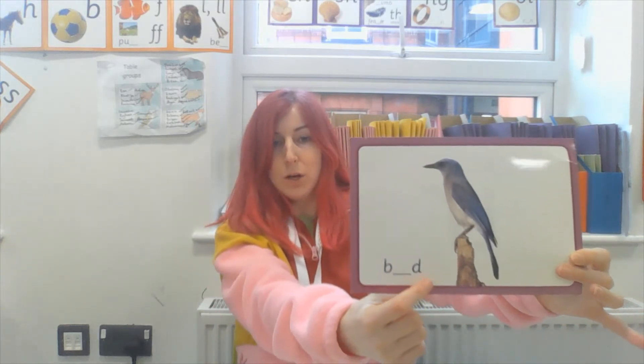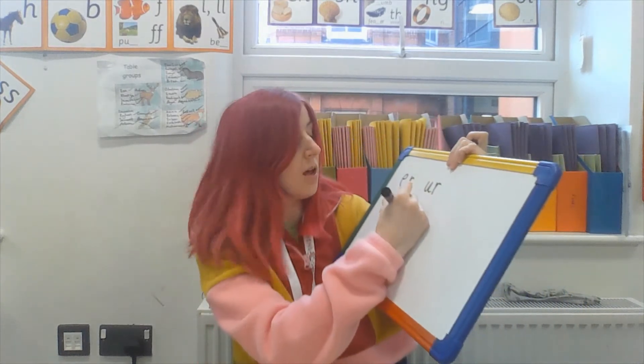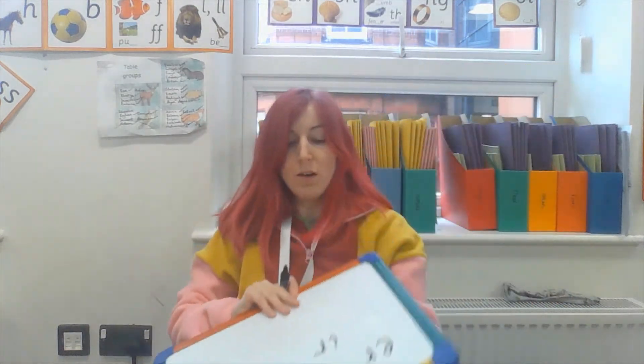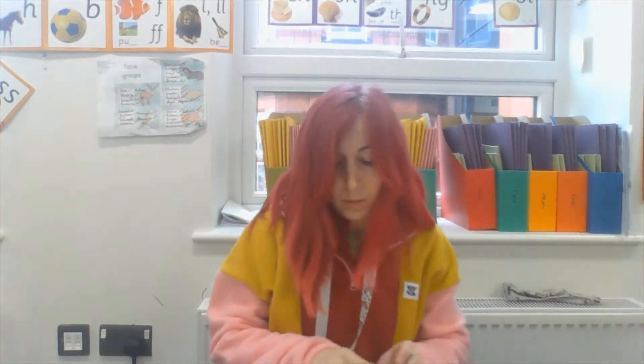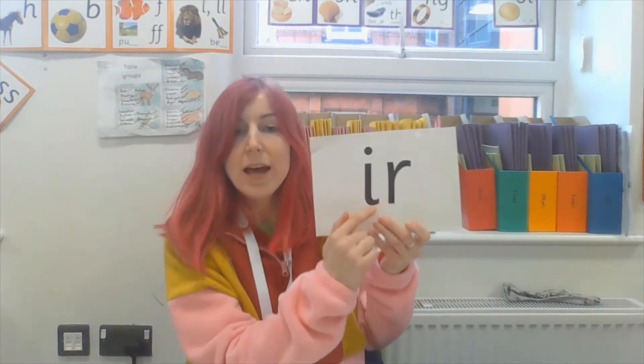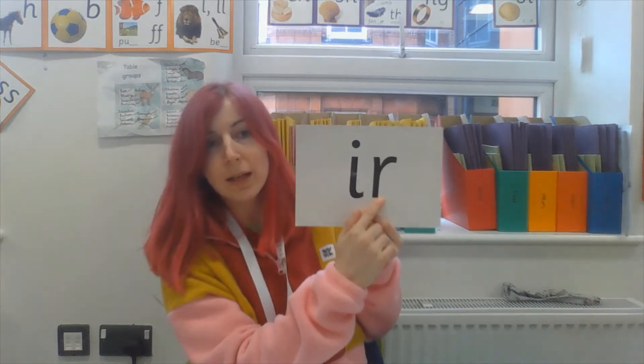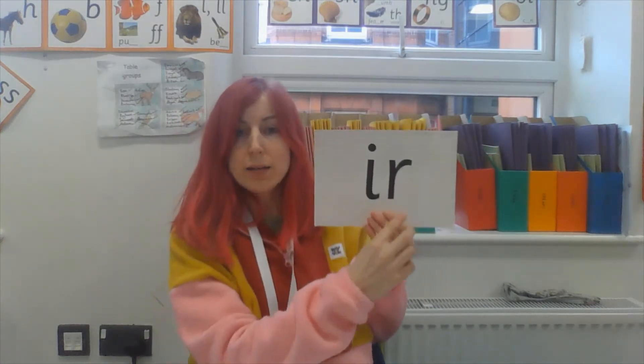Now it's time for our new phase 5 sound that we're looking at today. It is the 'ir' diagraph. We have learned two other ways of writing and reading 'er' before - there's the 'er' diagraph and there's the 'ur' diagraph - and today we are completing the set with the 'ir' diagraph for the 'ur' sound. The letter names are 'i' and 'r', and the sound is 'ur'.